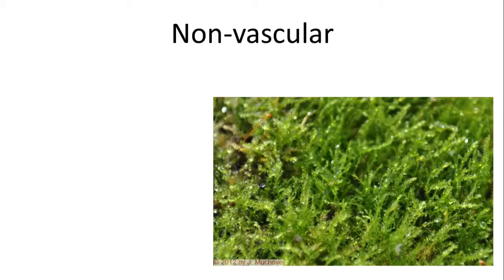We're going to start out with the non-vascular plants. These are plants that live in moist environments and we normally see them as moss. As moss grows and spreads around, it is the gametophyte — it is actually haploid in nature.